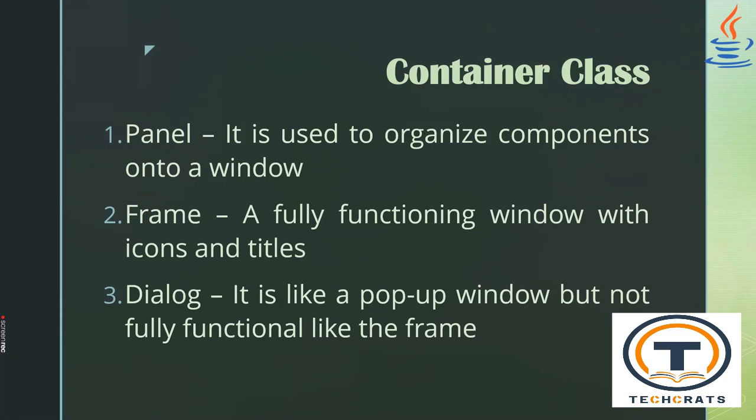There are three types of container classes. One is Panel, second is Frame, and third is Dialog. Panel is used to organize components onto a window. Frame is a fully functioning window with icons and a title. Dialog is a type of pop-up window, but not fully functional like a frame.